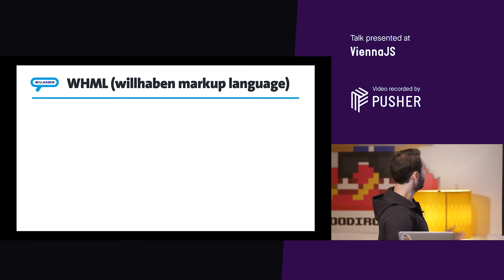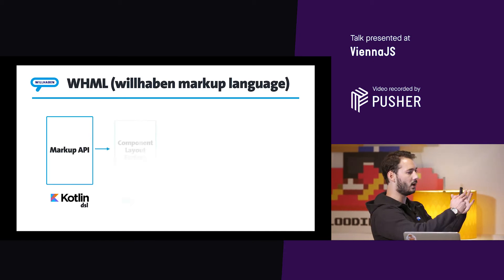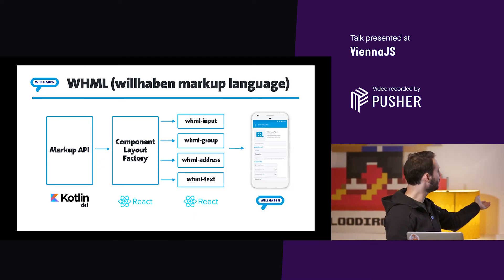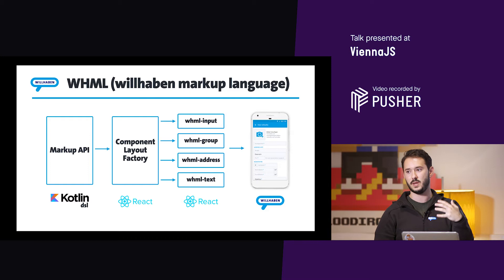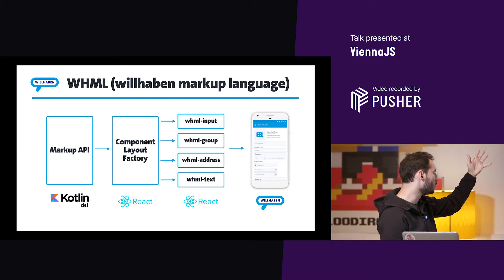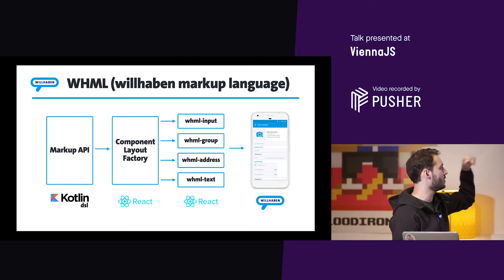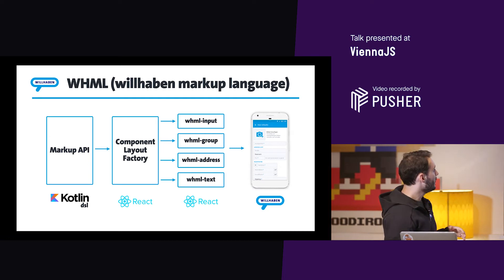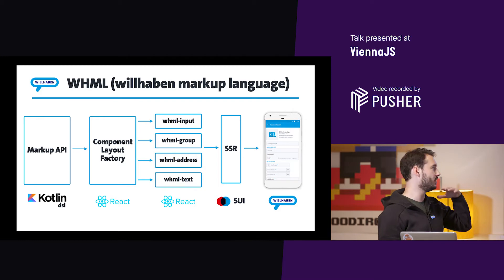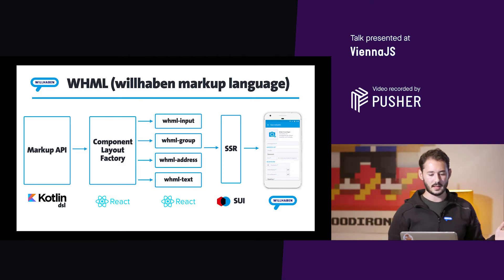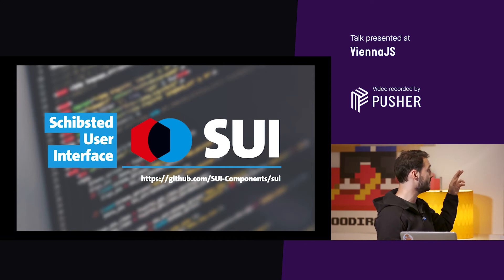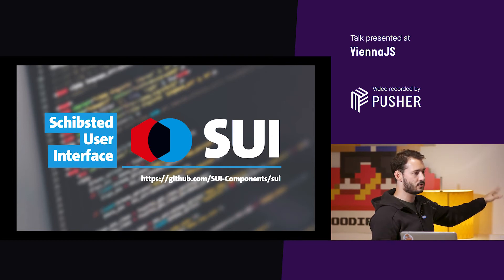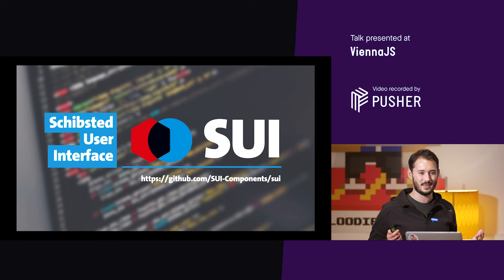So how does the whole journey look? We have a markup API built in Kotlin DSL. Whatever markup arrives is passed through a component layout factory, so we know which component to render to build the whole form — whether it's an input, a group, an address, text, image upload, or a page that opens a new modal. And about SEO, we wanted to use server-side rendering. Here is where I talk about SUI — an open source library built by our colleagues at Ziplisted in Spain, a company similar to Wilhelm.